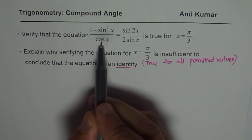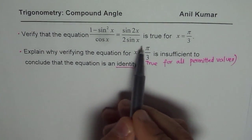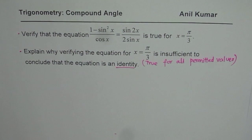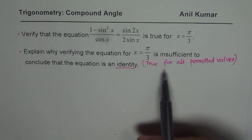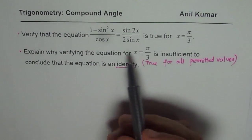Permitted means the denominator cannot be zero, so any expression will have some restrictions. Apart from those restrictions, it should be true for all other values of x. But an equation could be true for just one or two values.